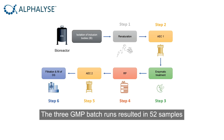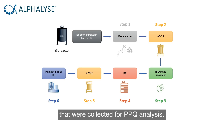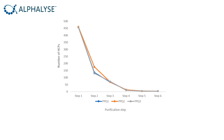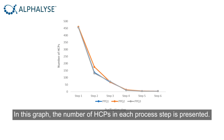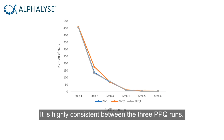The three GMP batch runs resulted in 52 samples that were collected for PPQ analysis. In this graph, the number of HCPs in each process step is presented. It is highly consistent between the three PPQ runs.